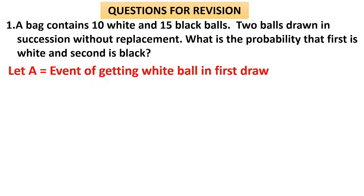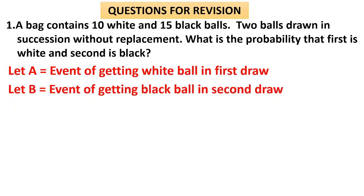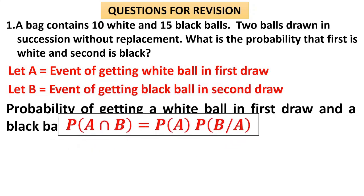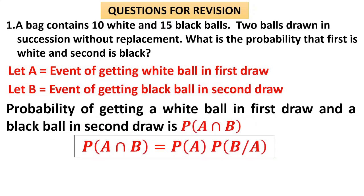A is the event of getting a white ball in the first draw. B is the event of getting a black ball in the second draw. The probability of getting a white ball in the first draw and a black ball in the second draw is A intersection B. They have clearly mentioned that first should be white and second should be black. Therefore, P of A intersection B is P of A into P of B slash A.